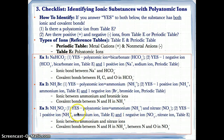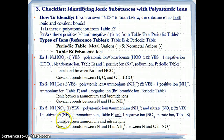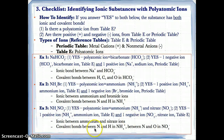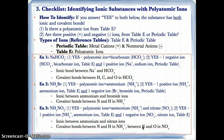For NH4NO3: do we have a polyatomic ion? Yes — we actually have two polyatomic ions: ammonium NH4+ from Table E, and nitrate NO3− from Table E. Are there positive and negative ions? Yes: NH4+ is positive and NO3− is negative, both from Table E. Both conditions are fulfilled, so we have ionic and covalent bonds. The ionic bond is between ammonium and nitrate because they are oppositely charged. The covalent bonds are between N and H in NH4+, and also between N and O in NO3−, because they are all non-metals.